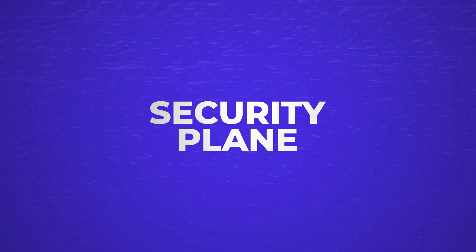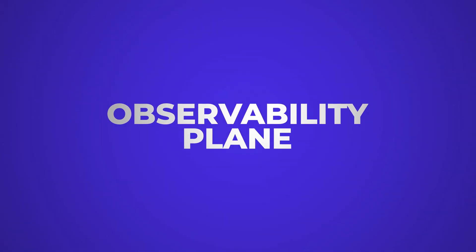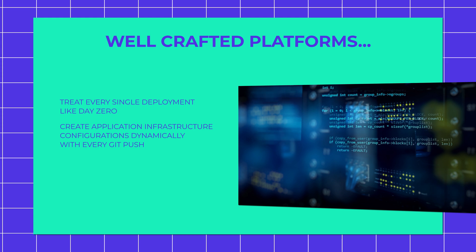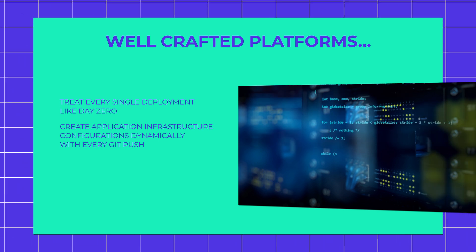The security plane includes policy layers and secrets management, and the observability plane covers logging and APM functionality. If you're a developer using a state-of-the-art internal developer platform, you should be able to self-serve everything you need to build, deploy, and operate your application and resources. It's important to point out that this goes way beyond the creation phase of a service. Well-crafted platforms treat every single deployment like day zero and create application and infrastructure configurations dynamically with every git push, ensuring consistency and standardization across the entire lifecycle of your application.